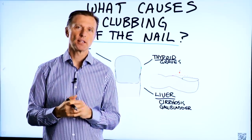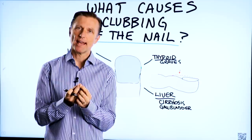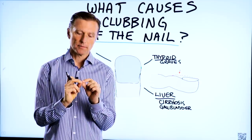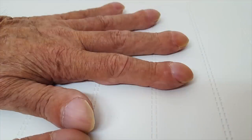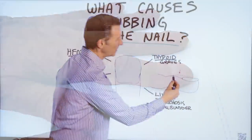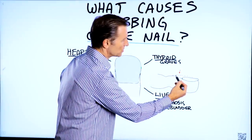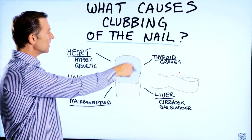Let's talk about what causes the clubbing appearance of your nail. The nail becomes thickened, enlarged, and starts to create a bit of a convexity as it enlarges. This is the appearance of a clubbed nail.